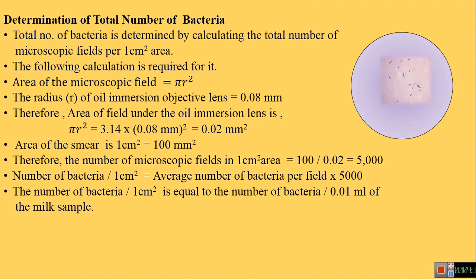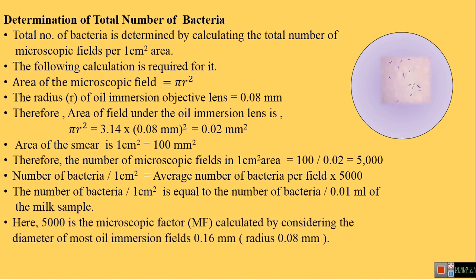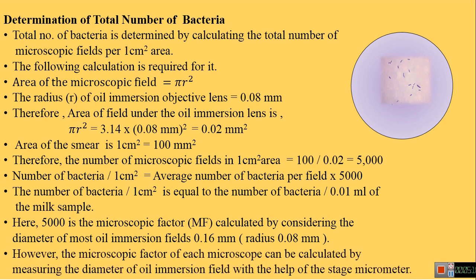Because we took 0.01 ml of sample for the preparation of the smear on the marked area, the value 5000 is the microscopic factor. It is calculated by considering the diameter of most oil immersion lenses as 0.16 mm. However, the microscopic factor of each microscope can be calculated by measuring the diameter of the oil immersion field with the help of a stage micrometer.